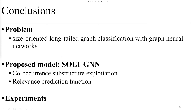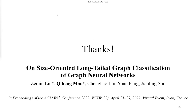Let's move to the conclusions. In this paper, we investigate a significant yet unexplored problem: size-oriented long-tailed graph classification with graph neural networks. To cope with this issue, we propose a novel model SORT-GN to enrich structure-scarce tail graphs, leveraging knowledge transfer through two novel modules: co-occurrence substructure exploitation and a relevance prediction function. Extensive experiments on five benchmark datasets demonstrate the effectiveness of our proposed SORT-GN. That's all for our presentation. For more details, please refer to our paper. Thank you.